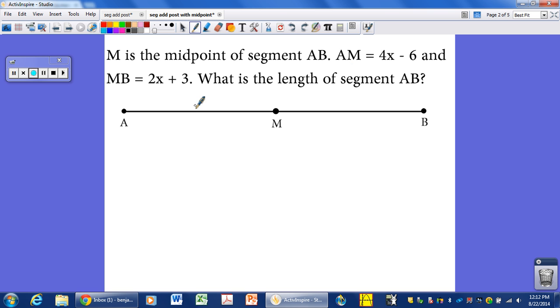We're given a length for AM. So that means that this length is equal to that length if M is the midpoint. So AM is 4X minus 6. MB is 2X plus 3. So what is the length of segment AB?